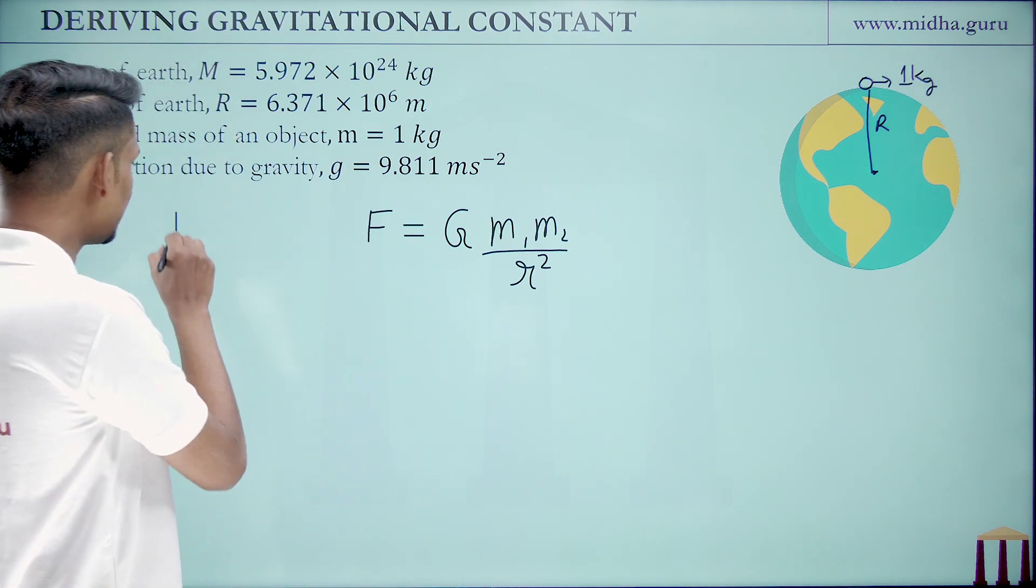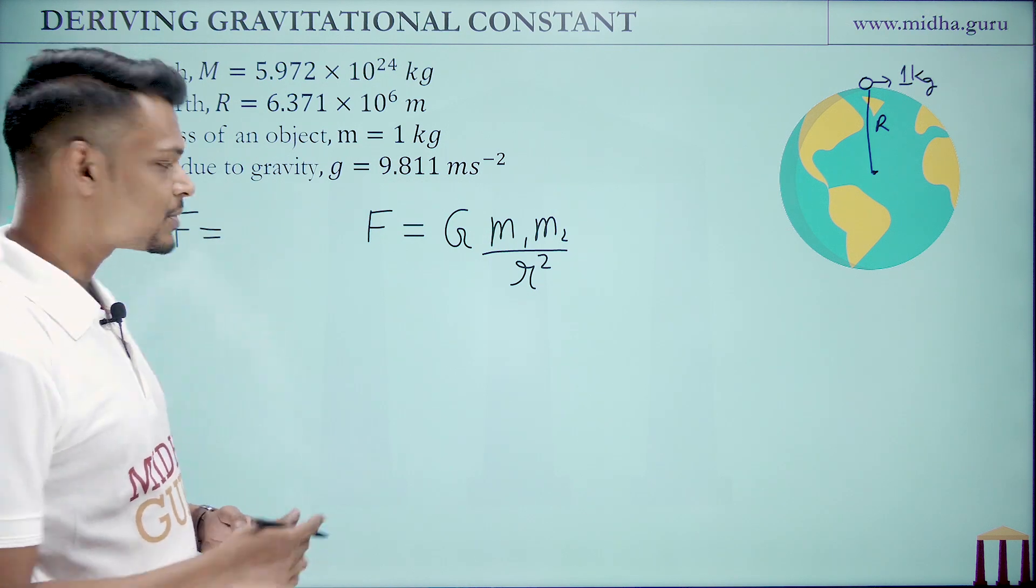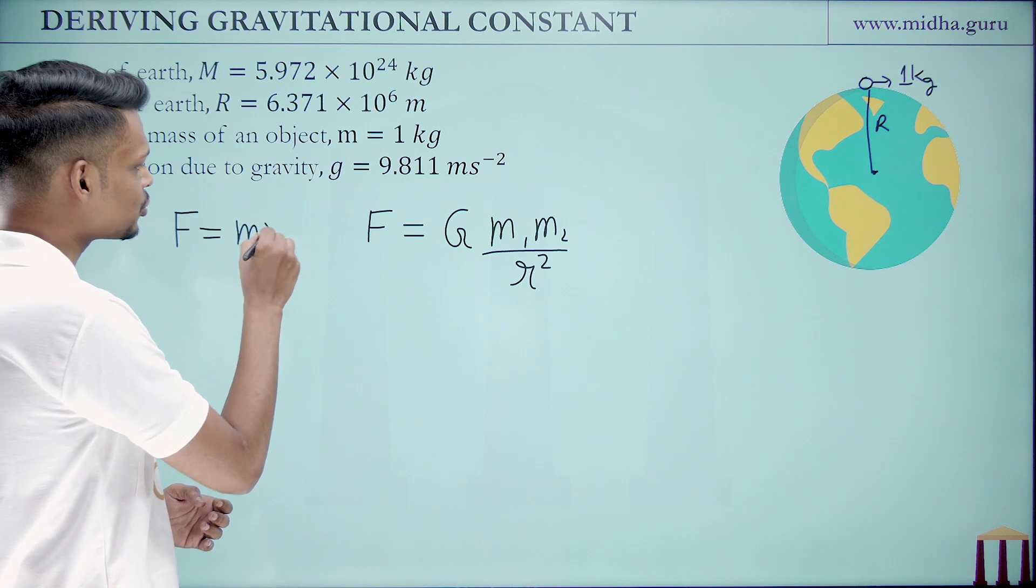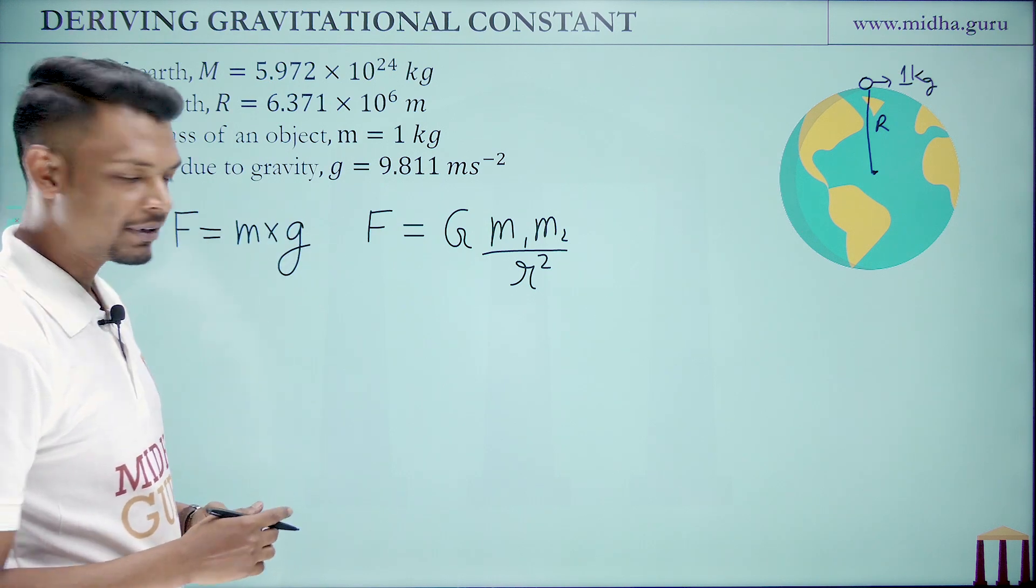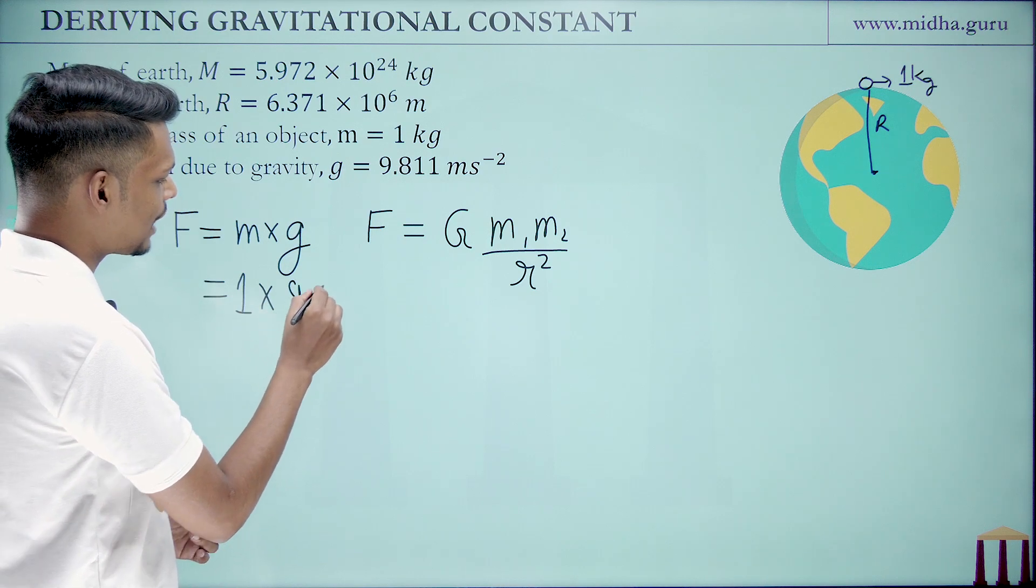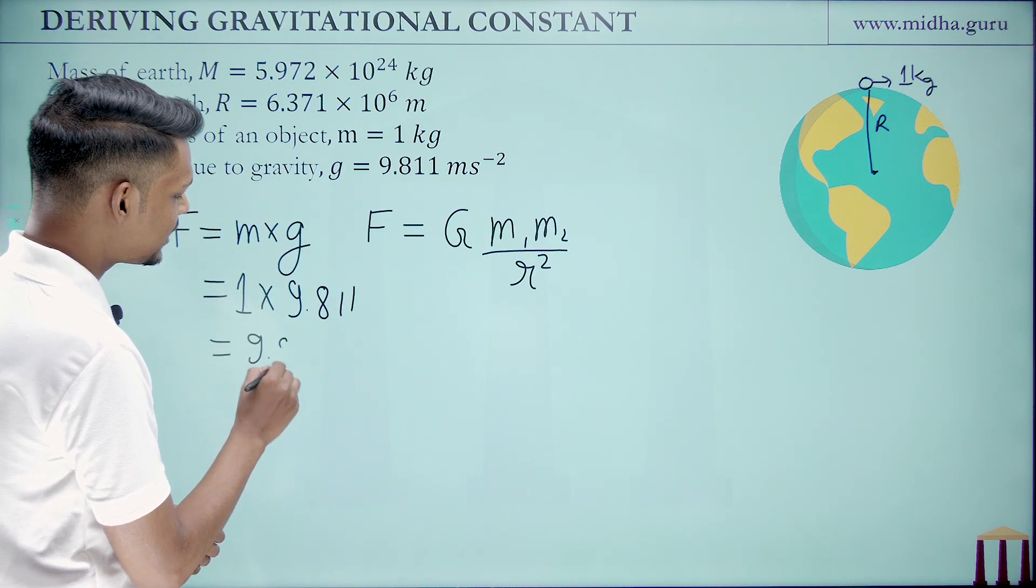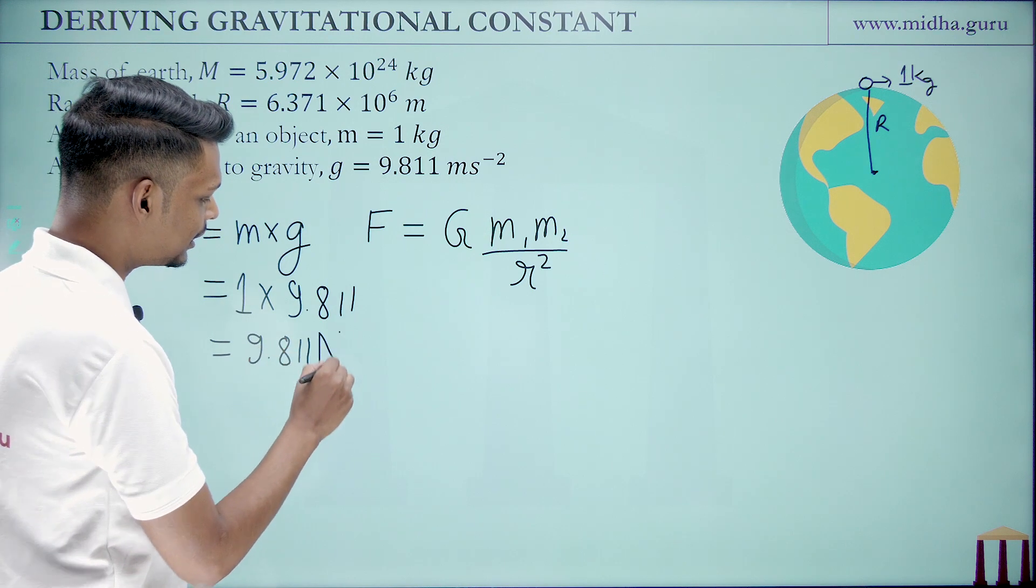Now we know that this gravitational force F, or in other words the weight W of an object, can be calculated as mass into acceleration due to gravity. Here the mass of the object is 1 kg and acceleration due to gravity is 9.811. Hence the weight of an object is 9.811 newton.